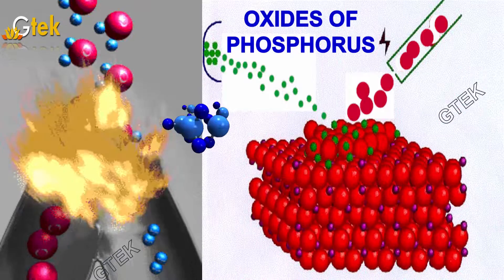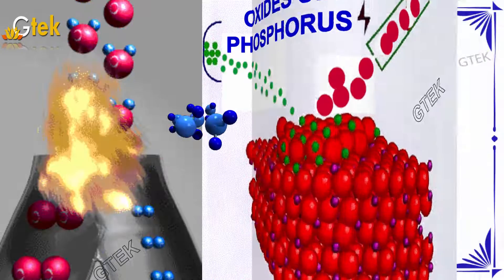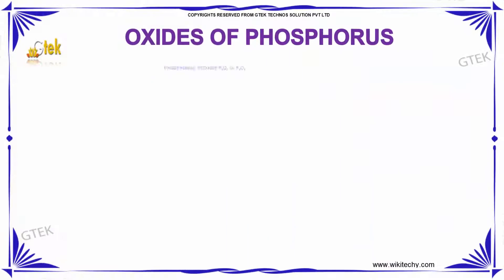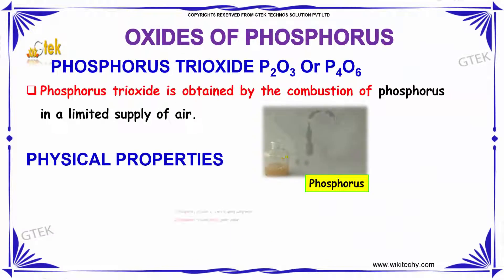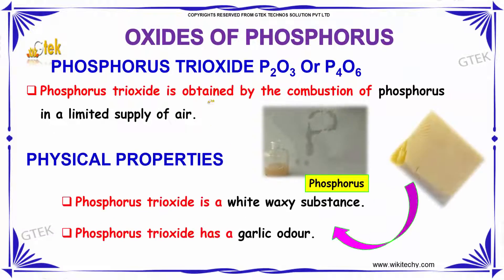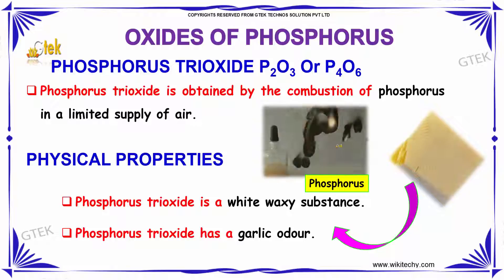Oxides of Phosphorus. Let's talk about Phosphorus trioxide. Phosphorus trioxide is obtained by the combustion of phosphorus in a limited supply of air.